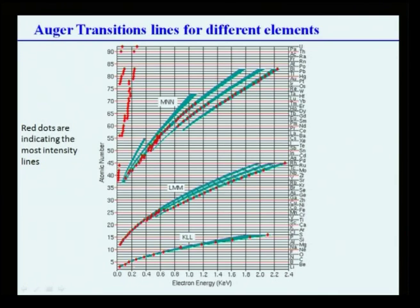For a given element, several Auger transition lines will be observed. A chart of atomic number versus electron energy, for elements from lithium to uranium, shows different transition series: KLL transitions are observable up to sulfur; LMM transitions occur from atomic number approximately 12 to 40; MMM transitions occur from approximately atomic number 37 to 84 and above; and for very high atomic number elements, M and higher-level transitions are observed. Red dots indicate the most intense lines seen in the spectrum. This chart is very important for knowing what transitions to expect during Auger measurements.